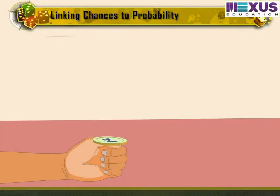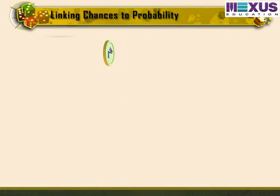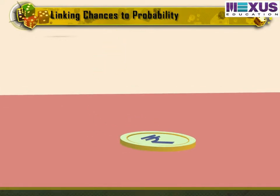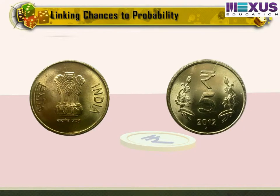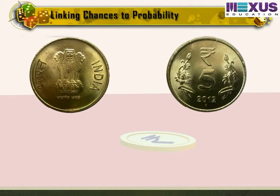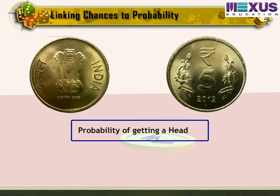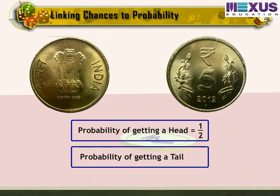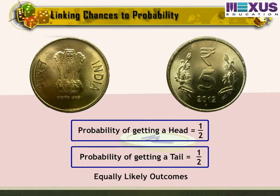We know that when a coin is tossed, there are two possible outcomes, that is, heads and tails. We say that the probability of the coin landing heads is one half and the probability of the coin landing tails is one half. Both the outcomes are equally likely.